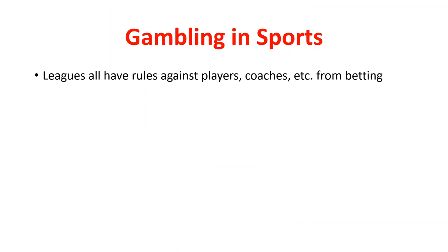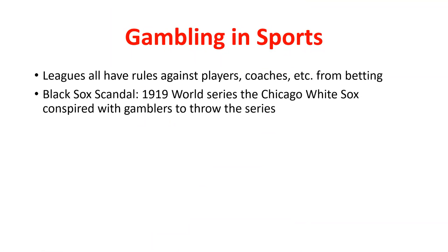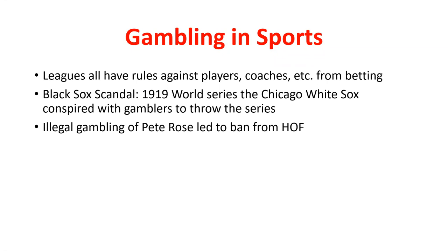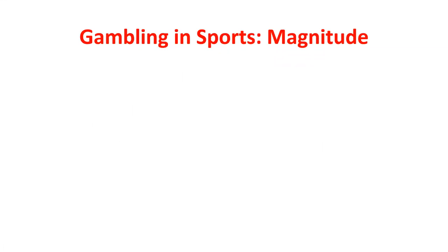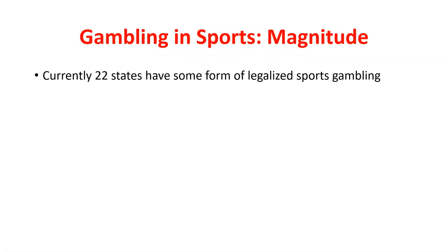All leagues have rules that the people involved — players, coaches — can't bet on the sport. There was a huge scandal in 1919 where the World Series was thrown because of gamblers. These leagues really want to make sure gambling doesn't play a role in the outcome of events — for example, Pete Rose was banned from the Hall of Fame for illegally gambling on games he was involved in. More recently we've also seen issues with referees.